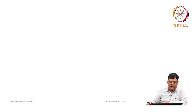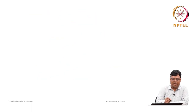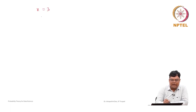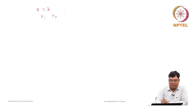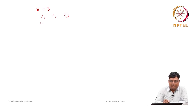That means X counts the number of successes in n tosses. Let us see how to find the probability mass function. Suppose we consider n equal to 3 to understand clearly. You toss the coin 3 times. Let X1 be the observation on the first toss, X2 on the second, and X3 on the third. Each of these values may be 0 or 1.